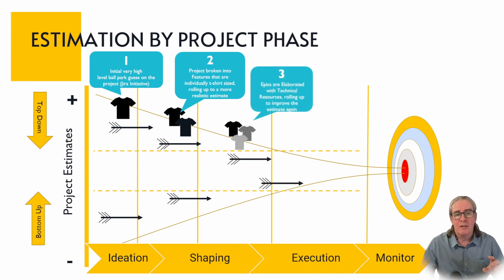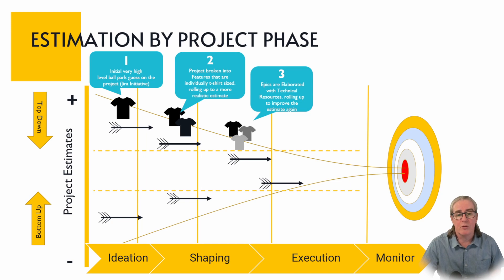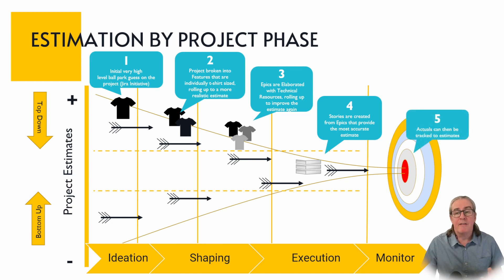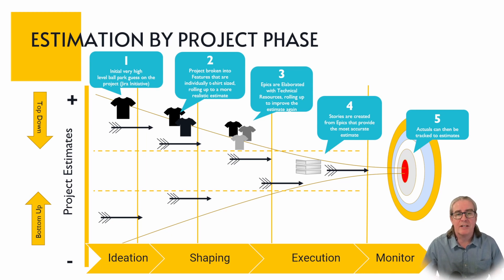Then you would take those features and break them down — typically with technical resources or whatever resources have more information — into epics, and these epics are t-shirt sized and rolled up again to improve the overall estimate. As you start getting into execution, stories are created from these epics, typically by the project team doing the work, getting much more bottom-up estimation. This gives you your most accurate estimate. Finally, you would have your actuals, and once you've gone into that monitor phase when the project's finished, these can be tracked back to what the original estimates were, purely to improve the whole process — not a finger pointing exercise, but really how to improve estimation over time for all projects coming down the pipe.